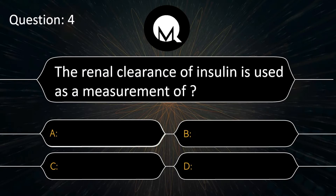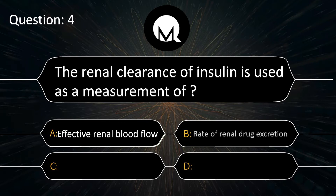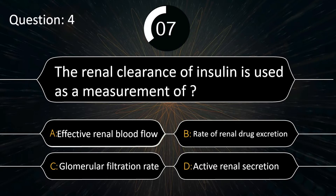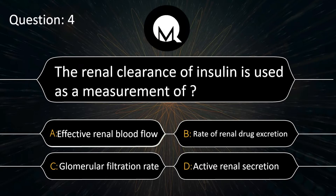The renal clearance of inulin is used as a measurement of: effective renal blood flow, rate of renal drug excretion, glomerular filtration rate, or active renal secretion. The answer is glomerular filtration rate.